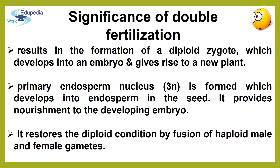After discussing the events leading to double fertilization, you must be wondering what advantage this process confers to flowering plants. As a result of double fertilization, a diploid zygote is formed which develops into an embryo and grows into a new plant. Secondly, a triploid primary endosperm nucleus is formed as a result of fusion of the other male gamete with the secondary nucleus. This primary endosperm nucleus develops into the endosperm in the seed, providing nourishment to the growing embryo. In addition, double fertilization also restores the diploid condition by causing fusion of haploid male and female gametes.